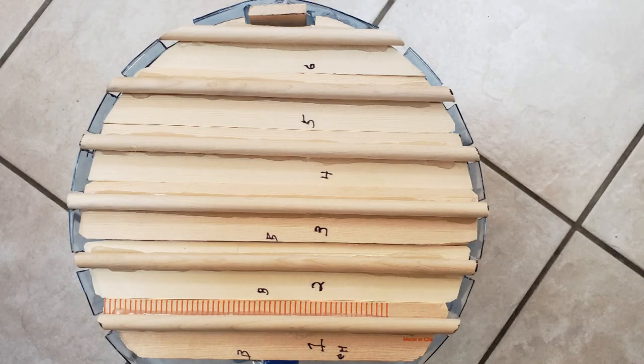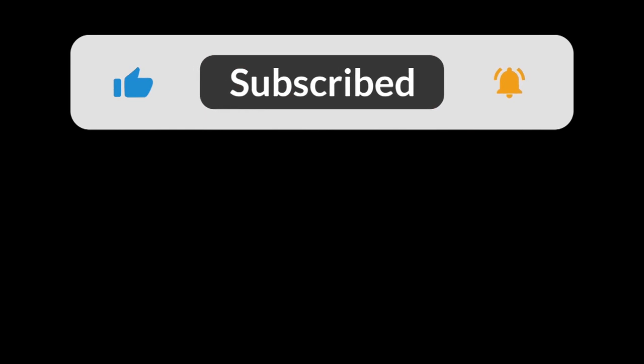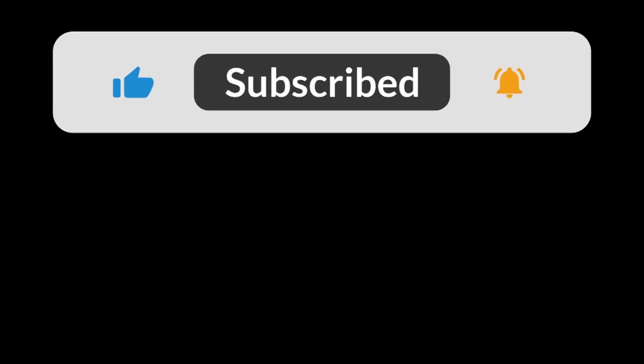Congratulations! You now have a round bottle beehive with a removable lid and removable top bars. Of course, you still aren't done so watch the video on installing foundation strips.